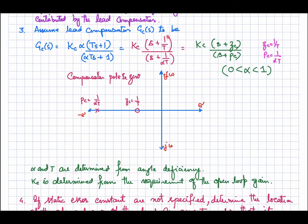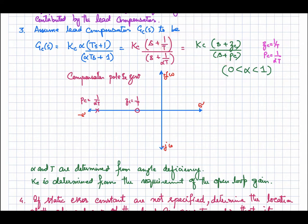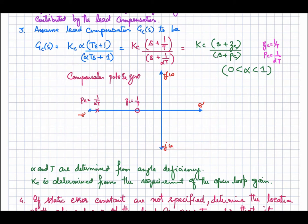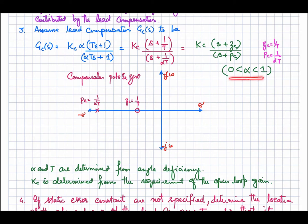The zero is at position Zc = 1/τ and the pole is at Pc = 1/ατ. Since the pole is on the left side of the zero, alpha must be between 0 and 1 — if alpha is less than 1, your pole will be on the left-hand side of your zero. After assuming the compensator transfer function, you determine the position of the zero and pole from the angle that is to be compensated by your lead compensator.